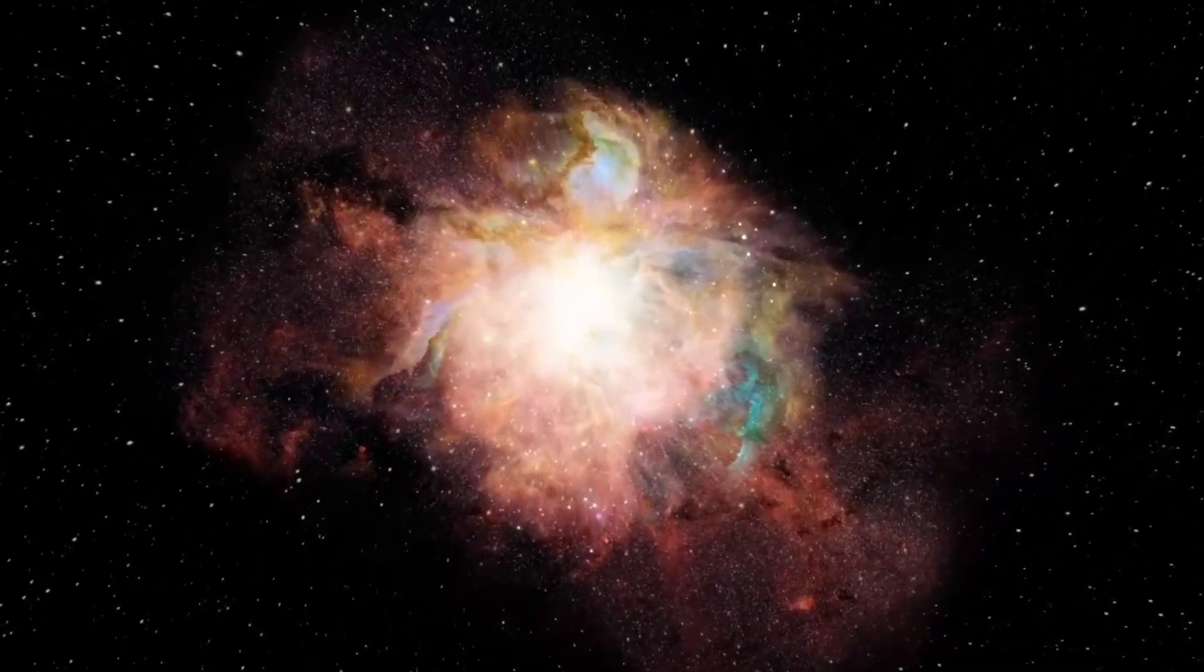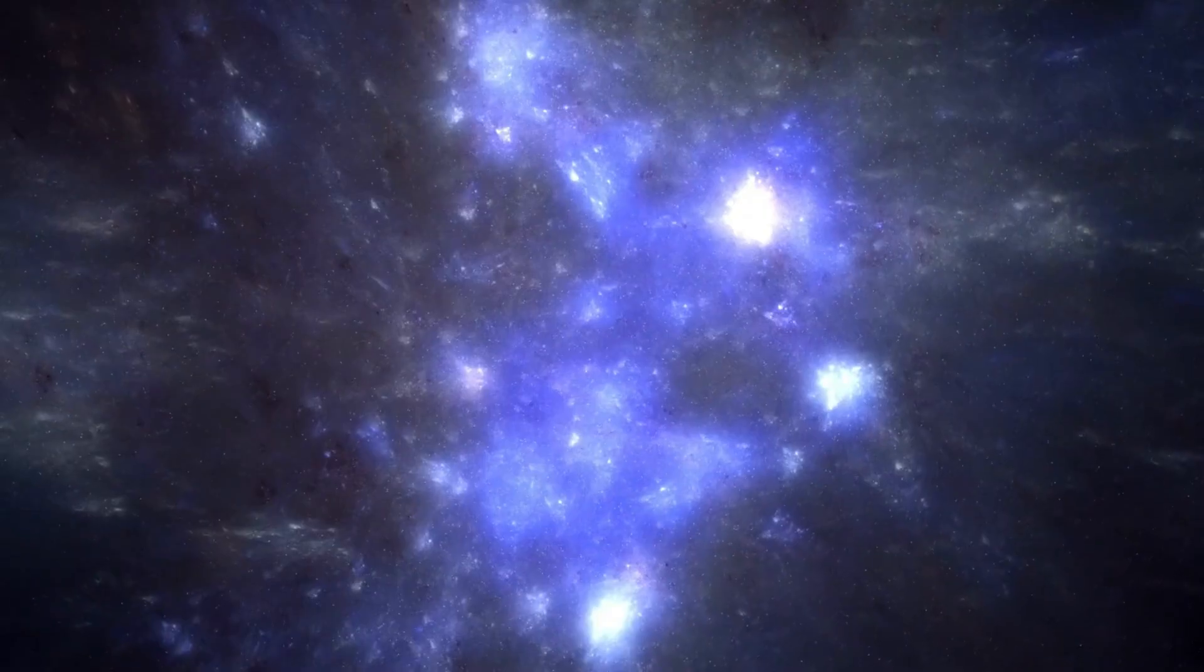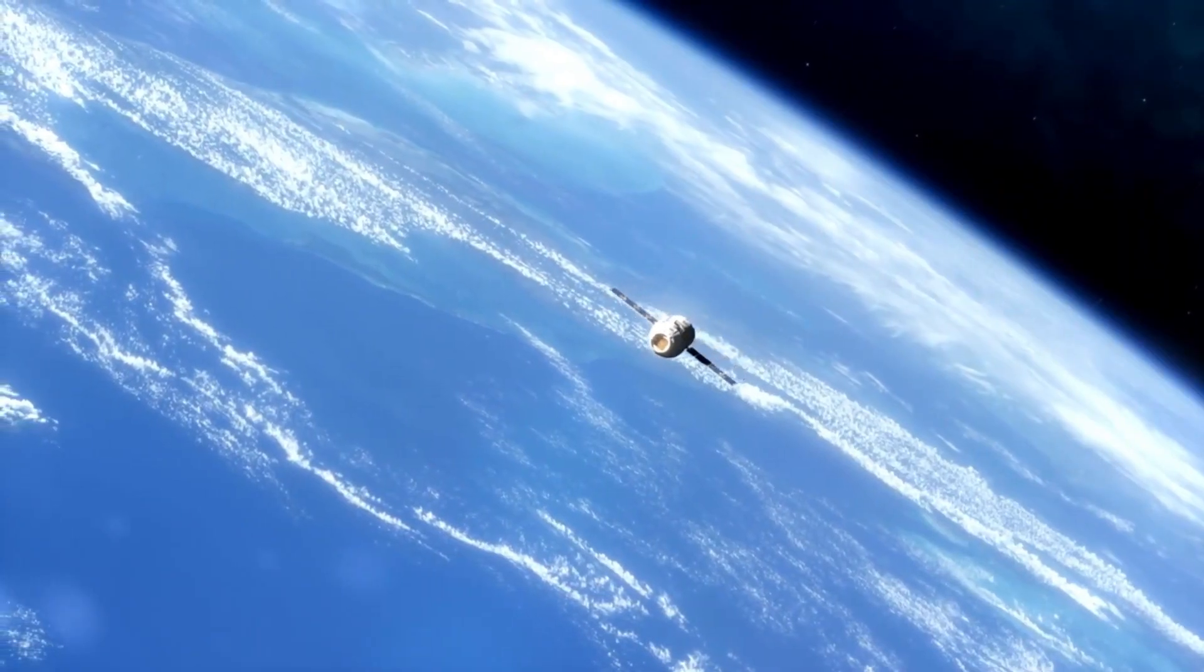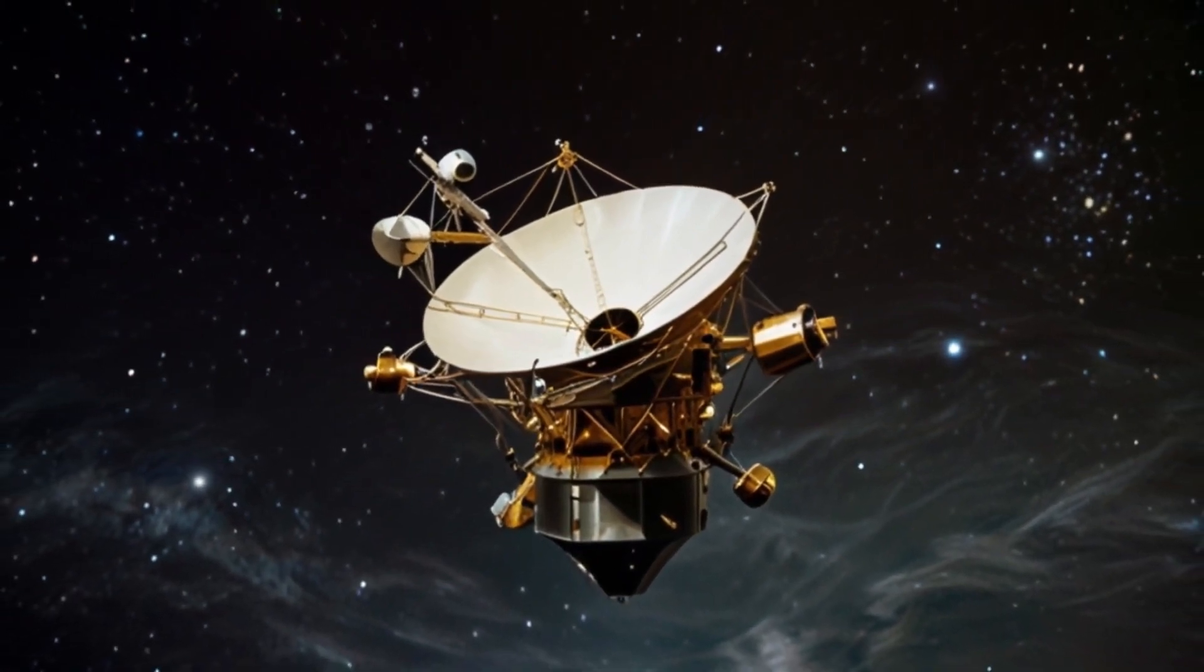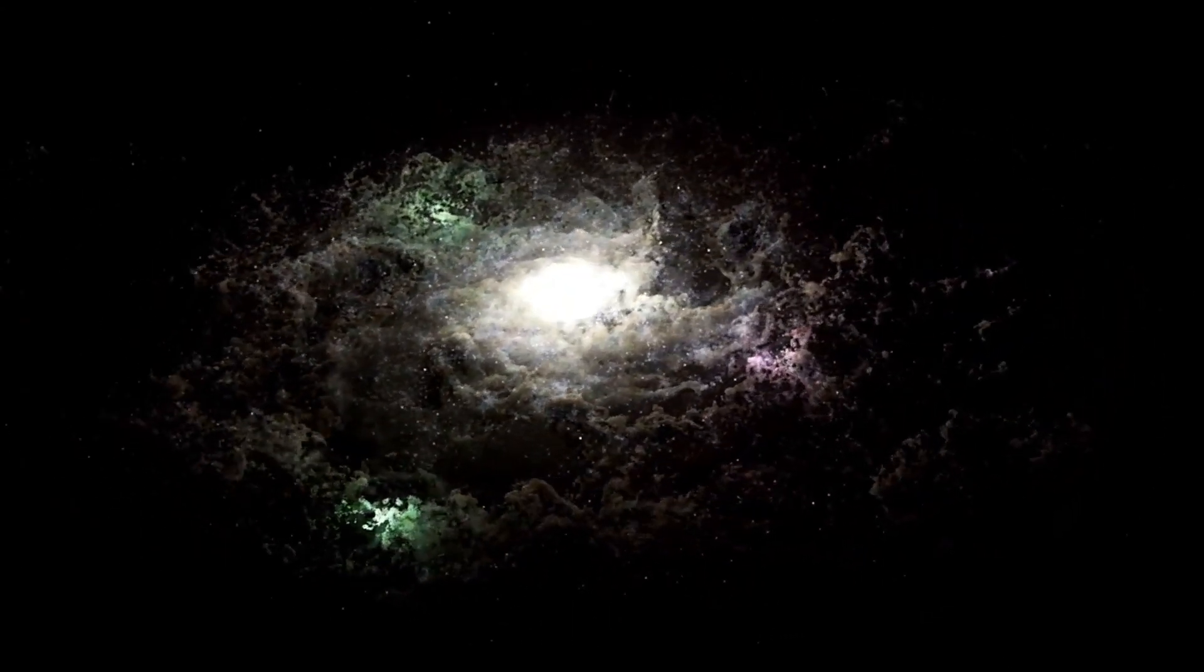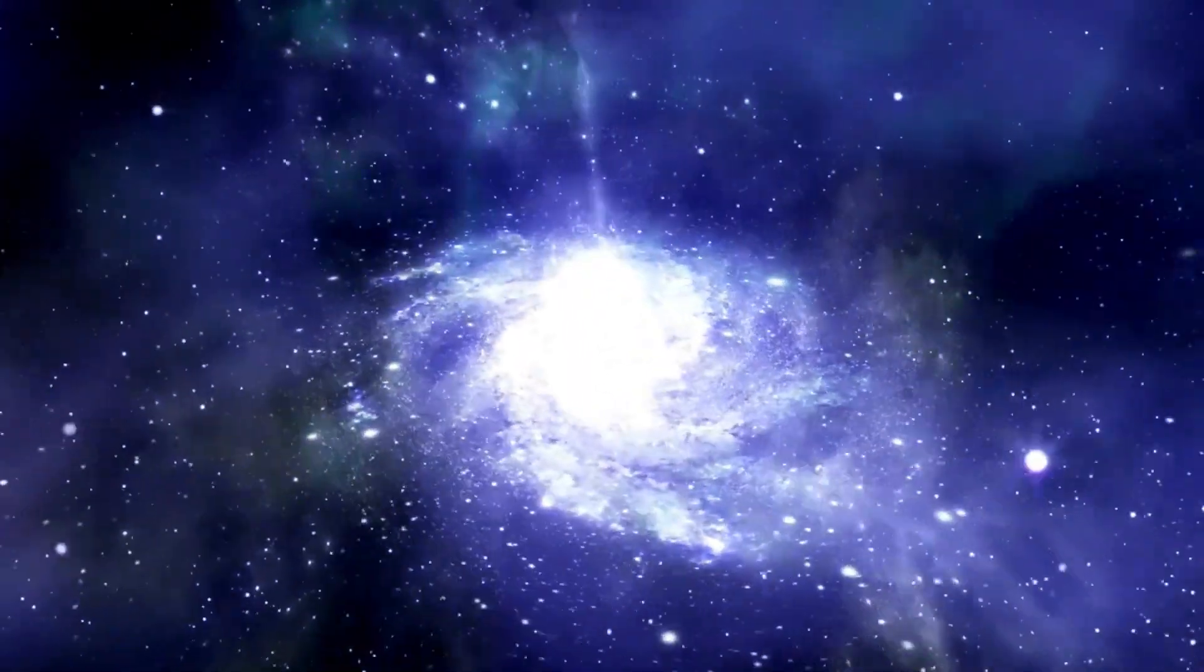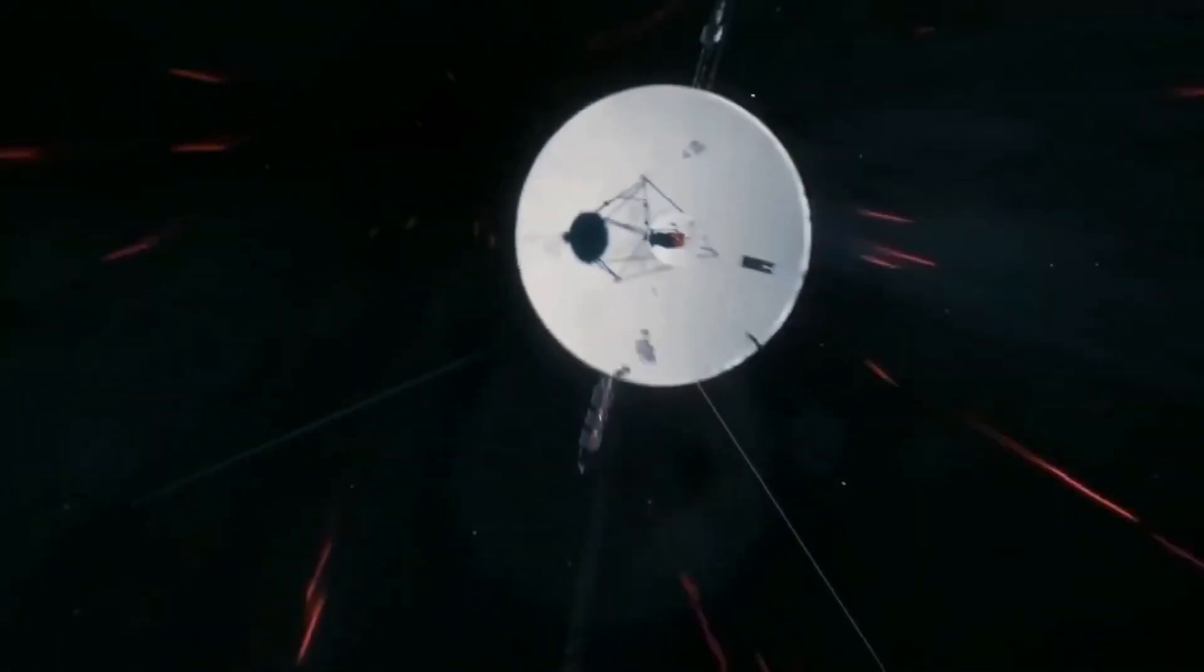In May 2023, Voyager 1 experienced an unusual event during its regular operations. The part of the spacecraft responsible for controlling its high-gain antenna, known as the Attitude Articulation and Control System, AACS, started sending back confusing data instead of the usual updates on the spacecraft's health and status. It seemed like Voyager 1 was having trouble communicating effectively, similar to how someone might struggle to speak fluently due to a condition like electronic aphasia. From our perspective on Earth, it appeared that Voyager 1 was experiencing electronic confusion. The data it sent back seemed random or lacked coherence, as NASA explained at the time.